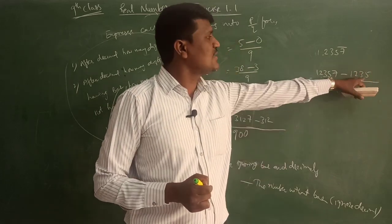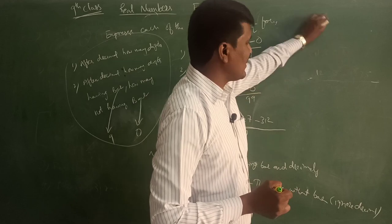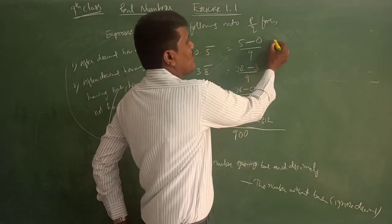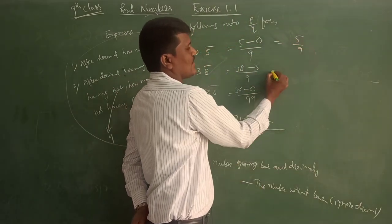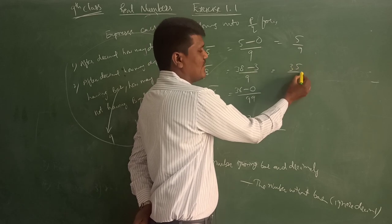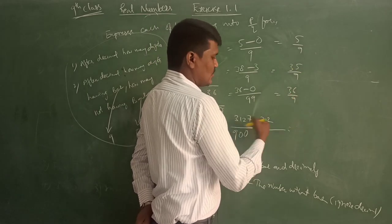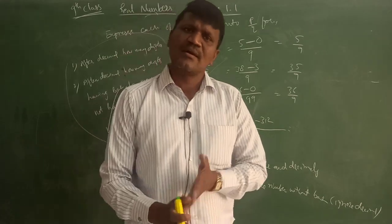So the final answer will be directly: 5 minus 0 is 5 by 9. 38 minus 3 by 9 is 35 by 9. And this is 36 by 9. And this you do, that will be your answer.